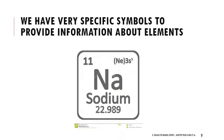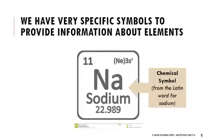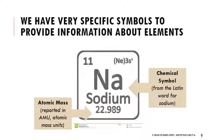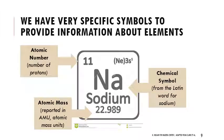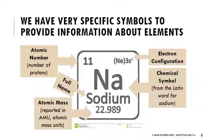When looking at the periodic table, we convey a lot of information very effectively. We have the chemical symbol, which is a two-letter set — in this example we're looking at sodium, where Na comes from the Latin word for sodium. We have the atomic mass reported in atomic mass units, and the atomic number which represents the number of protons. The number of protons remains consistent; the number of neutrons can fluctuate depending on certain situations. We might also have the full name listed, and sometimes information about the electron configuration.